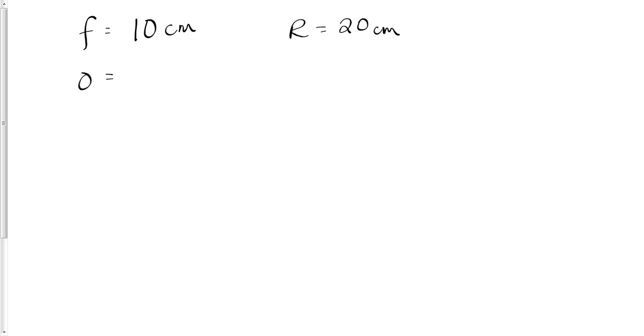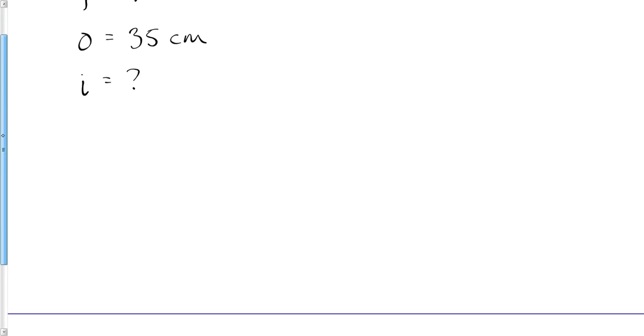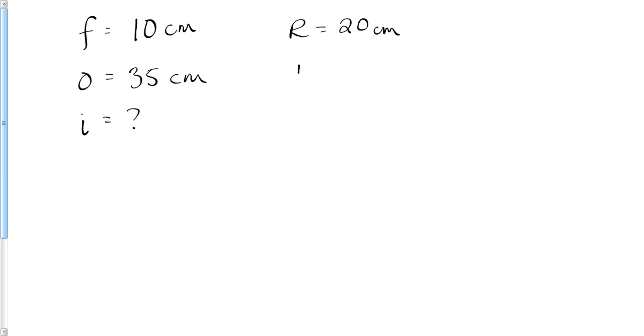35 centimeters. So where do we expect that image to be? One over f equals one over i plus one over o. One over the focal length, 10 centimeters, equals one over the image distance, which we're solving for, plus one over the object distance, that's 35.